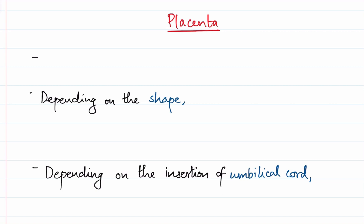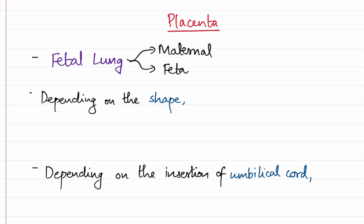What is placenta? Placenta is nicknamed as the fetal lung — a term that is self-explanatory because it provides oxygen for the fetus and removes its waste materials. The placenta has two parts: a maternal part called the decidua, and a fetal part which is mainly the chorion or the chorionic villi.